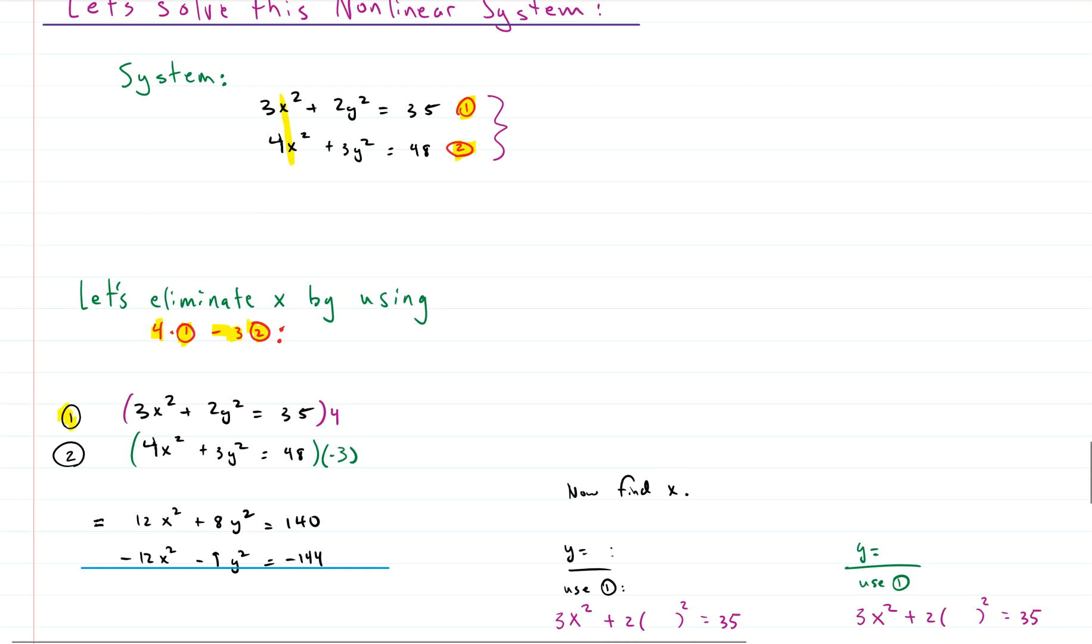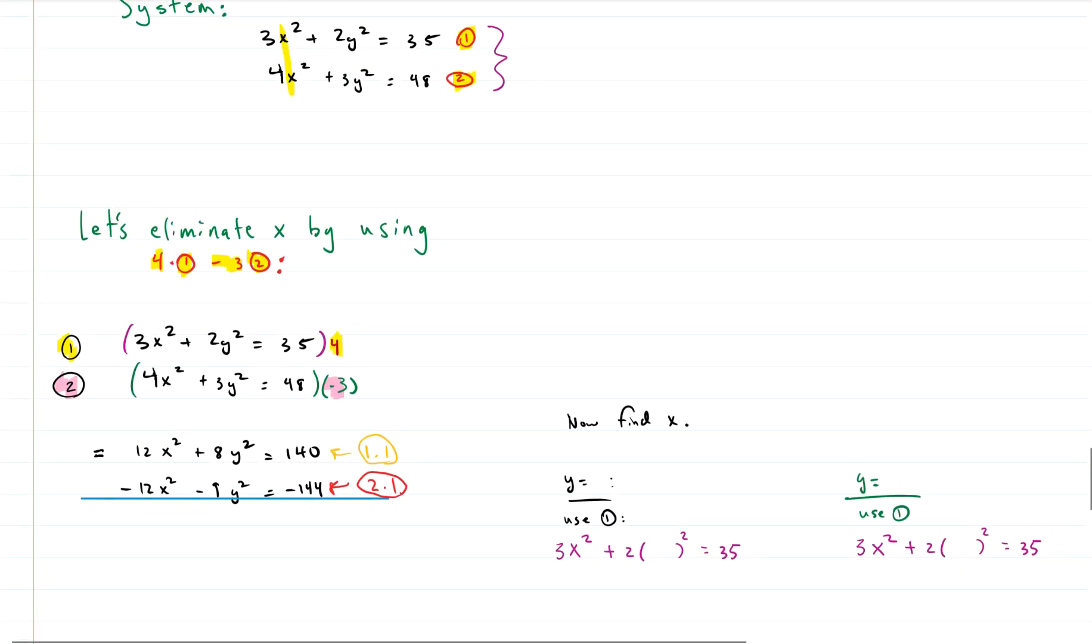So here we have equation one. And if we multiply the whole thing by four, then we get 1.1, which is here, 12x squared plus 8y squared equals 140. And if we multiply equation two by negative three, then we get equation 2.1. It's 2.1 because it's not two, but it's our new version of two. We get negative 12x squared minus 9y squared equals negative 144. Now, if we add those two equations, equation 1.1 and 2.1, what do we get? Well, this is nice. We got zero here. That's exactly what we wanted. And looks like we get negative y squared and negative four.